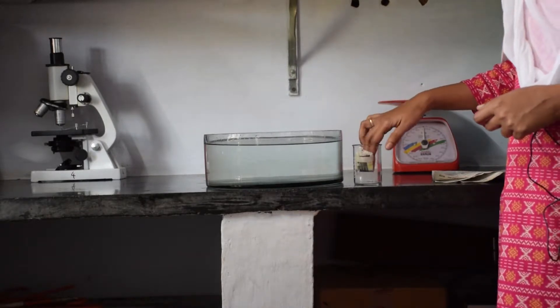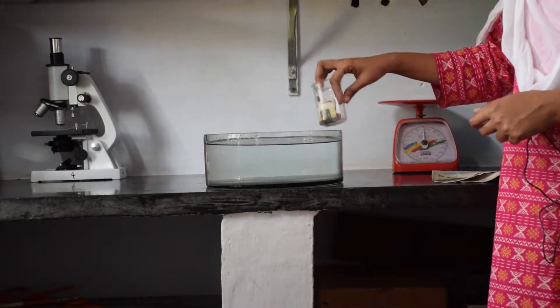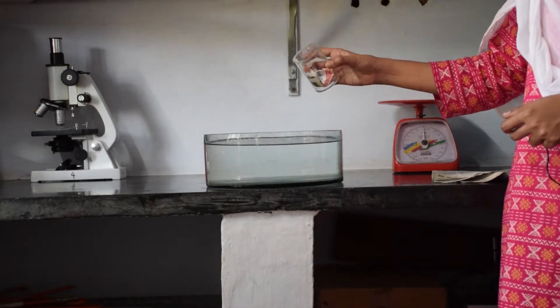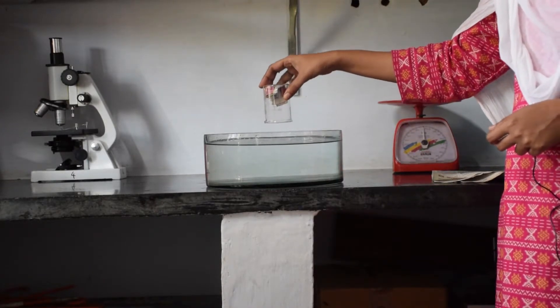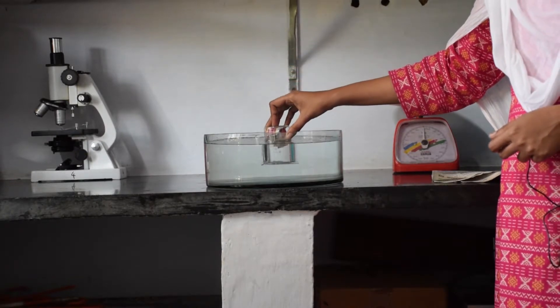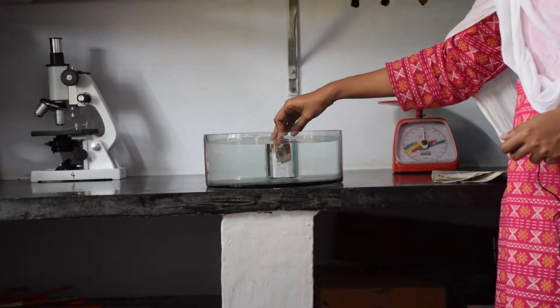This newspaper did not get wet when we placed it inside the beaker because there is air inside the beaker and when we put it straight into the vessel, the air has no chance of escaping out.